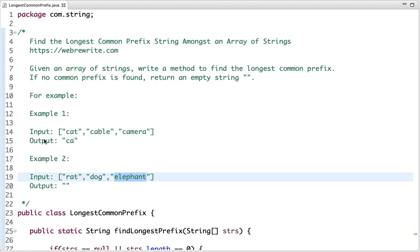So if you see the first example, then CA is the common prefix. You can see in the example CA is present in all these strings. And if you take the second example, no common prefix is found, so we have returned an empty string. So this is the problem statement.